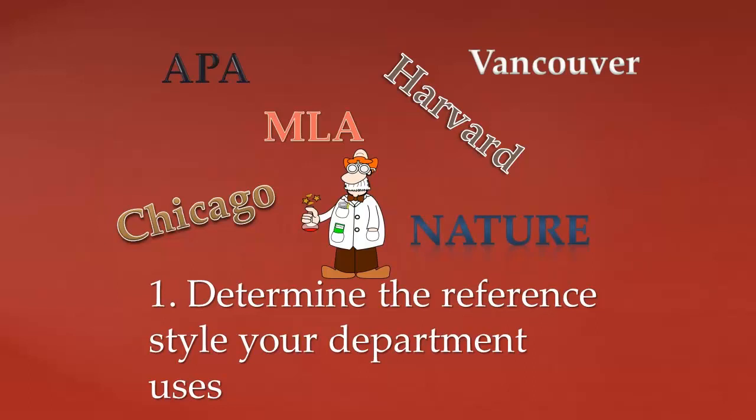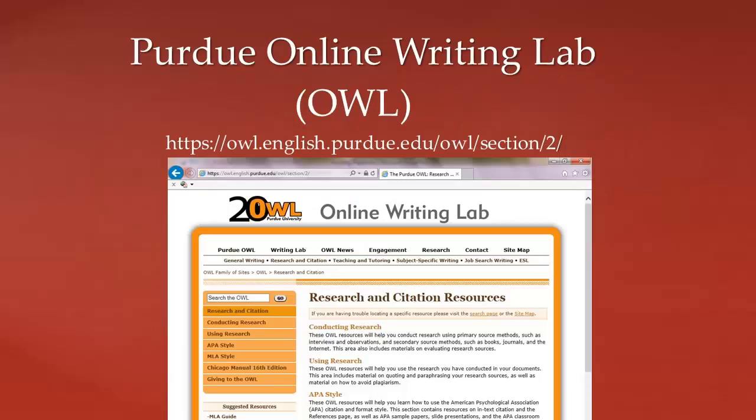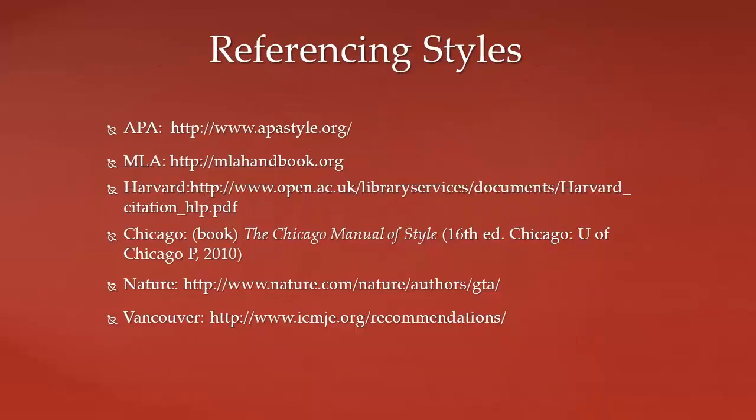Different referencing styles mean different formatting rules, so make sure to read up on the one that is applicable to you. If you are unsure, there are some really good guides available on the internet. Purdue OWL is excellent for APA, MLA, and Chicago, but each referencing style has its own website with specific guidelines. Some are easier to make sense of than others.